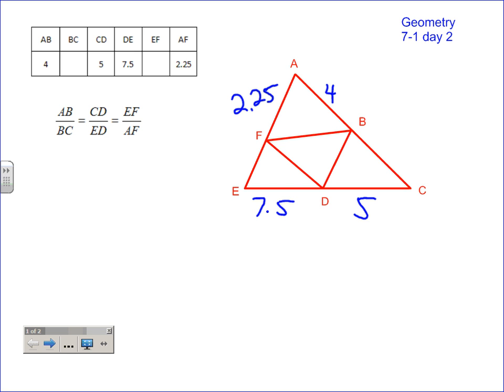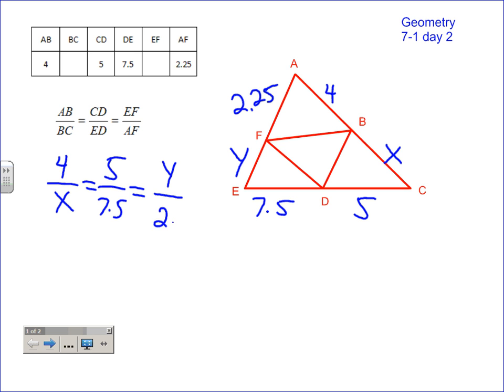Now that we've got the picture figured out, let's fill in the proportion. Do we know AB? Yes — that's 4. Over BC: do we know that one? No, so we want to put a variable there. Most people use X, so I'll put X there and also put it in the picture. Equals — do we know CD? Yes, that's 5. Over DE? Yes, that's 7.5. Do we know EF? No. We should be careful — let's make EF equal to Y rather than X, since they might not be the same value.